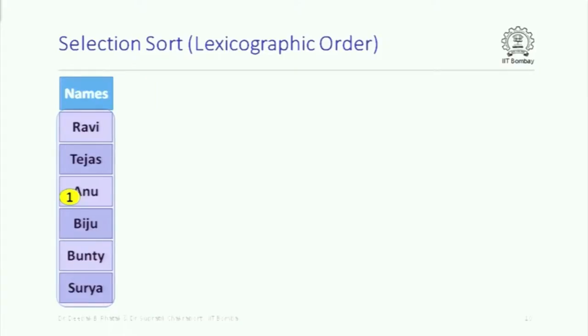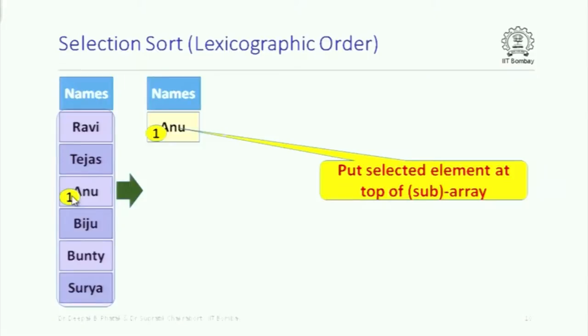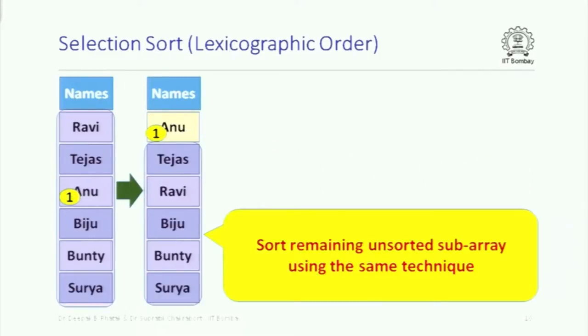This is just like selection sort but applied on strings. Remember in selection sort, we looked at the entire array, found the element that should go to the topmost position — specifically, we found the maximum element and put it in its rightful position. Here, instead of the maximum element, we find the lexicographically first element — the element that appears first in dictionary order. That is 'Anu' in this case. We put it in the topmost position and then sort the remainder of the array.